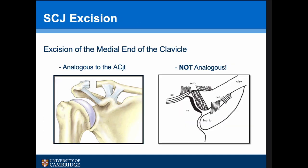Previously, surgery of the sternoclavicular joint was done as an open procedure analogous to an AC joint — removing about a centimetre of the medial end of the clavicle. However, the SCJ and AC joint are very different. At the AC joint, the trapezoid ligament keeps position so the gap doesn't collapse. At the medial end, if you remove a centimetre of the SCJ it just collapses down, so you don't really get any effect.